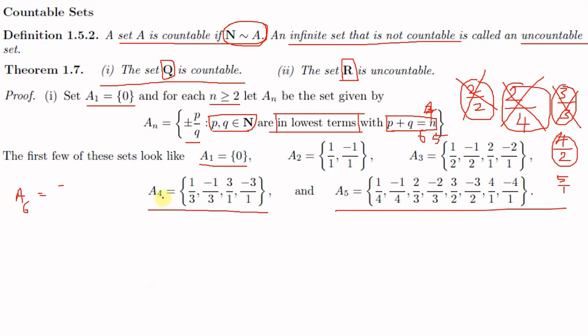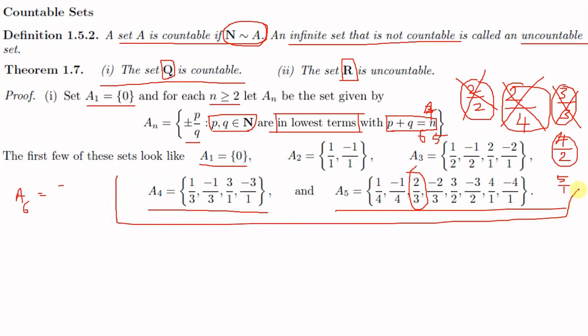We can observe that each of the Aₙ sets is finite, and any rational number will appear in exactly one of the Aₙ's. For example, 2/3 appears only in A₅ because 2 + 3 = 5 and 2 and 3 are in lowest terms. So every rational number appears exactly once across all the Aₙ's.